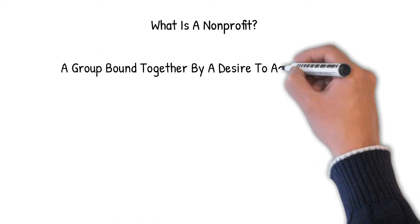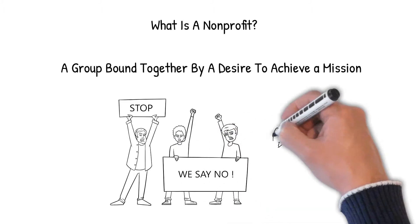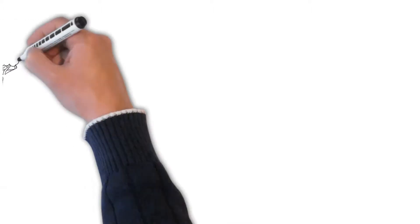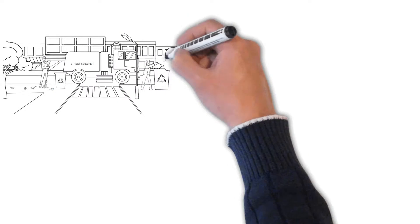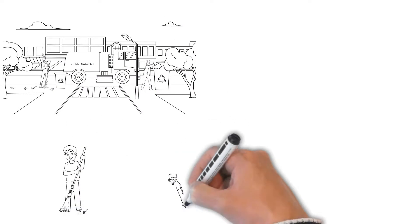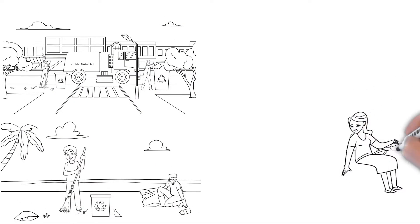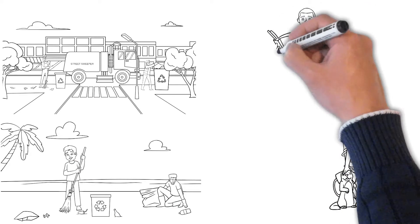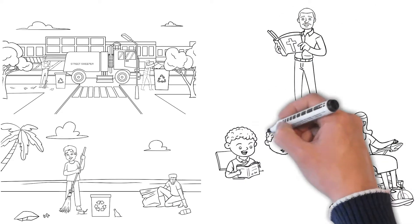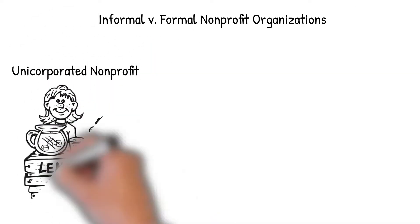The term nonprofit describes groups that are bound together by a desire to achieve a mission. Nonprofits are actually all around us — they can be recycling programs, beach cleanups, animal rescues, religious organizations, and even educational institutions. They're any organization that wants to change the world.